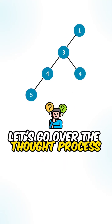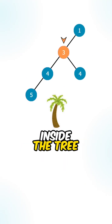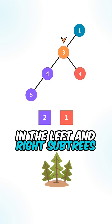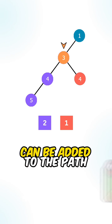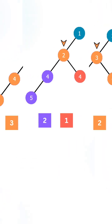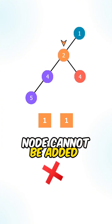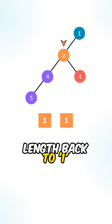Let's go over the thought process. For each node inside the tree, we can first find the length of the longest consecutive sequence path in the left and right subtrees. If the current node can be added to the path, we increment the length by 1. If the current node cannot be added to the path, we reset the length back to 1.